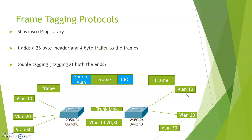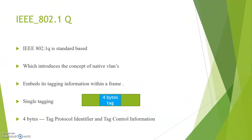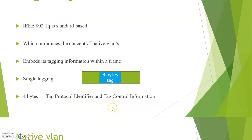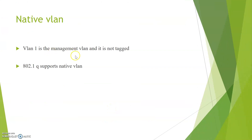The Inter-Switch Link protocol is Cisco proprietary. The second protocol is IEEE 802.1Q, which is standard-based and introduces the concept of native VLAN. Native VLAN is a method of carrying untagged traffic. It embeds the tagging information within a single frame — that is why we call this single tagging. This 4-byte tag contains a tag protocol identifier and tag control information. VLAN 1 is the management VLAN and it is not tagged. Native VLAN is supported by 802.1Q.